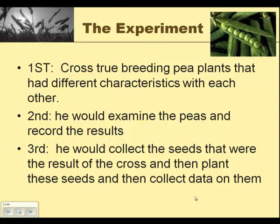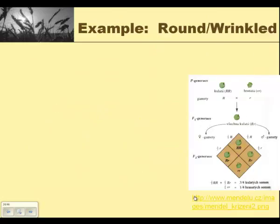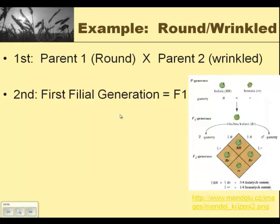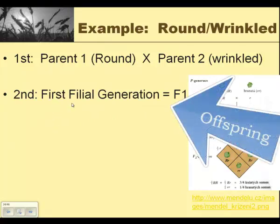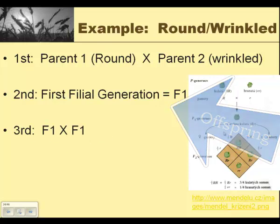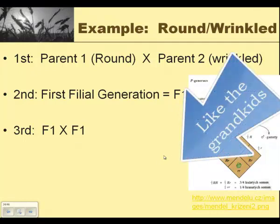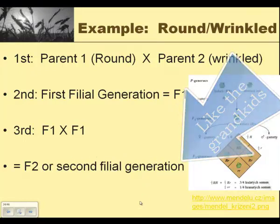It all comes back to this basic idea. For example, if we look at seed shape and round and wrinkled as our starting point: parent number one is round, parent number two is wrinkled. The first filial generation equals the F1 generation. The F1 generation crossed by the F1 generation produces the F2 generation, or the second filial generation.